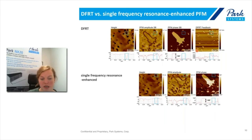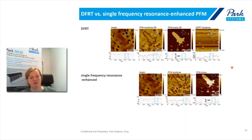Furthermore, looking at the DFRT feedback output, we have an additional measurement channel that gives us information on where the contact resonance shifts. In this case, the frequency channel essentially gives us topography information — a frequency change occurs whenever there is a topographic feature. But for materials with inhomogeneous nanomechanical behavior, the DFRT feedback signal can serve as an additional measurement channel.